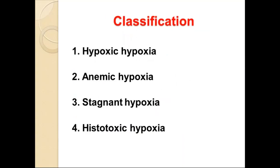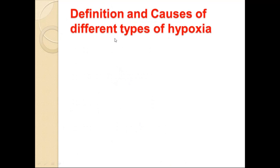Hypoxia is classified as follows: hypoxic hypoxia, anemic hypoxia, stagnant hypoxia, and histotoxic hypoxia. The classification depends on the cause of hypoxia and the definition of causes of the different types.